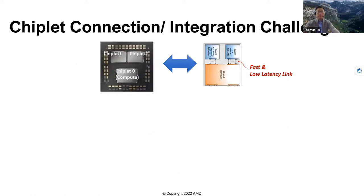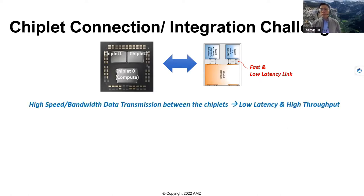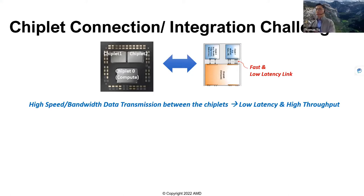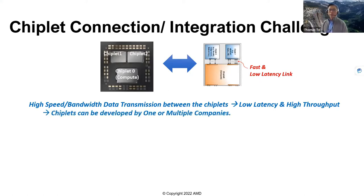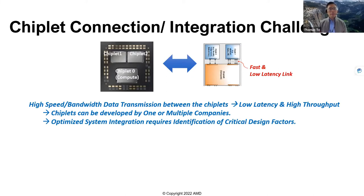These pictures depict chiplet connections. We have two or maybe three chiplets — the compute die sitting on one side, and then we have two chiplets. Intuitively, you can see that we insert a chiplet along the path of the compute die, receiving data from a camera, an optical sensor, or from other chiplets. We insert a third-party agent in between. We do not want them to be slow — we want to create a link with the lowest possible latency and highest throughput.